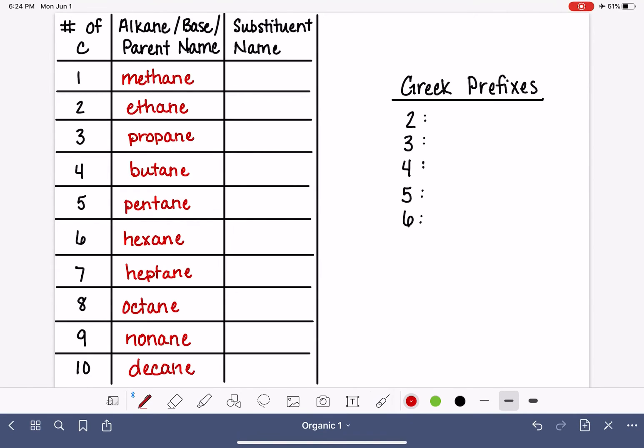So for all of these names, because they all end, they all have the same ending, you might start to wonder, does that mean something? Is there significance to that? There absolutely is. The ending ane is a suffix that we use to indicate that the molecule is an alkane. And the initial part we call the prefix, that is used to indicate how many carbon atoms are in that particular alkane. So it's very handy.